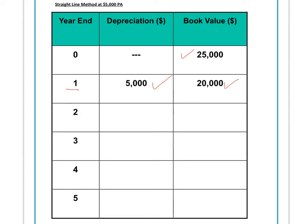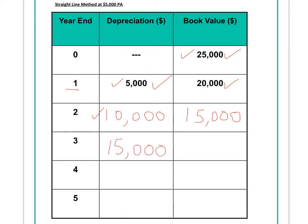In the second year, you charge another $5,000 to your income statement. In your balance sheet the original cost remains the same, but total depreciation is now two years' worth — $5,000 plus $5,000 — giving $10,000, leaving a net book value of $15,000. In year three, total depreciation becomes $15,000 (three times $5,000), leaving a net book value of $10,000. This pattern continues into years four and five.